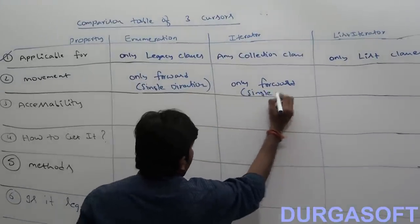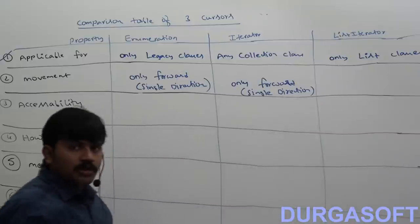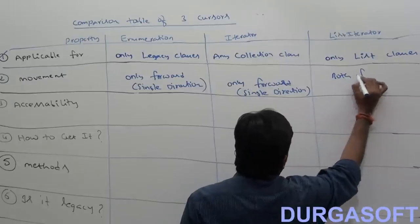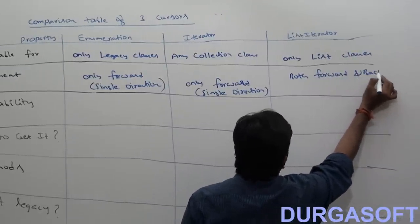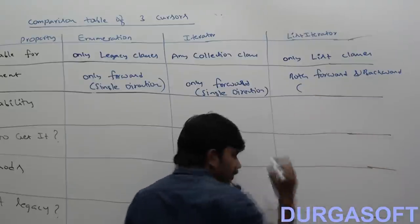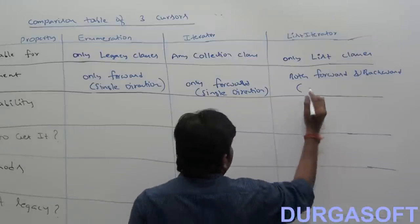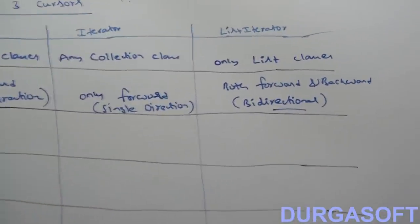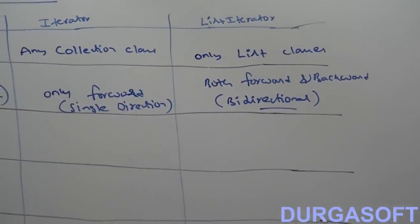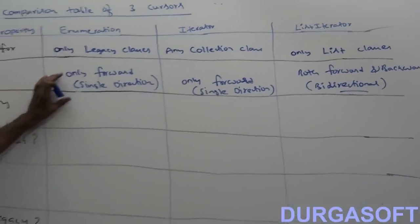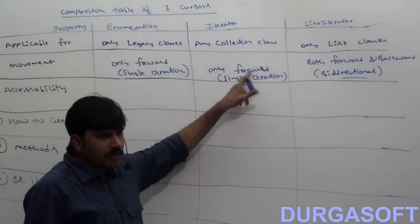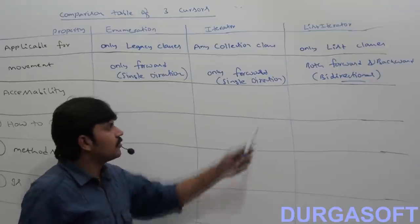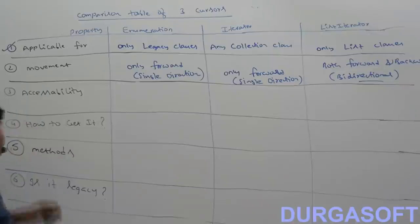But what about list iterator? With list iterator, we can move both forward and backward. That's why it is called a bi-directional cursor. So enumeration and iterator move only forward, but list iterator can move either forward or backward — both possibilities are there.